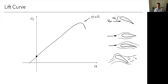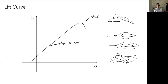Stall is something pilots must train to recover from. This is a very typical lift curve — very linear until approaching stall. Theoretically, the slope here equals 2π — this is something you would prove in an aerodynamics class. The slope, sometimes given the symbol M, is the change in lift with respect to alpha. Theoretically it's 2π; with viscous effects it's generally a bit less than 2π, but pretty close.